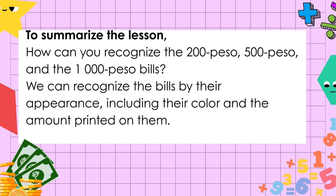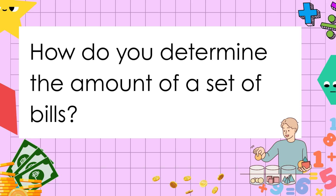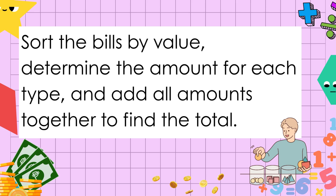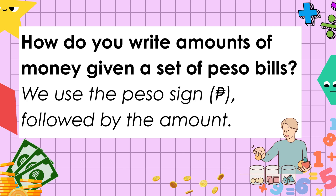Class, how can you recognize the 200 peso, 500 peso, and 1,000 peso bills? We can recognize the bills by their appearance, including their color and the amount printed on them. How do you determine the amount of a set of bills? Sort the bills by value starting with the highest, then add all amounts together to find the total. You can also sort the bills by value, determine the amount for each type, and add all amounts together. How do you write amounts of money given a set of peso bills? We use the peso sign followed by the amount.